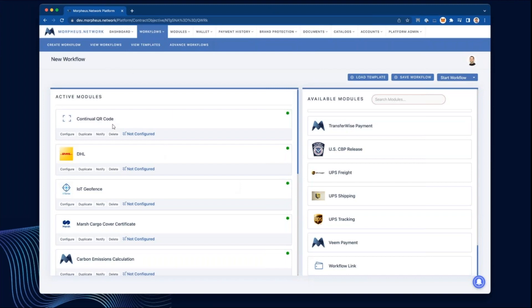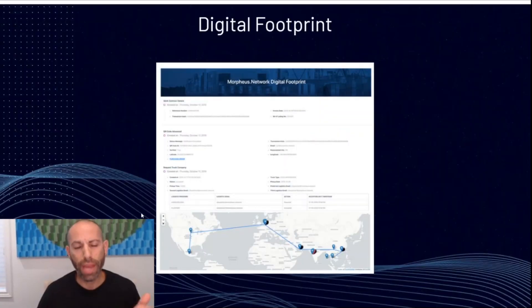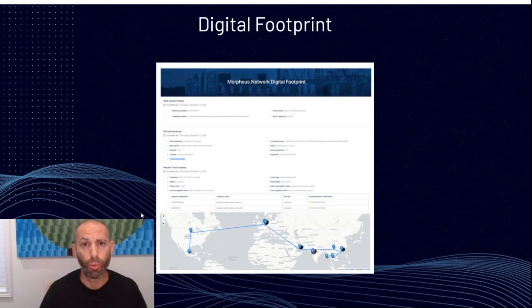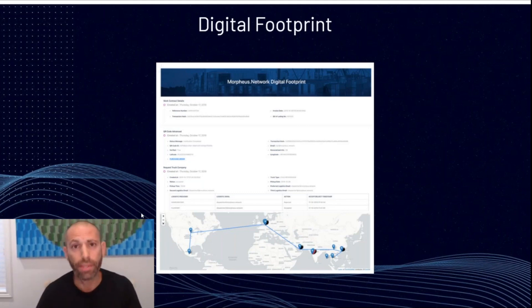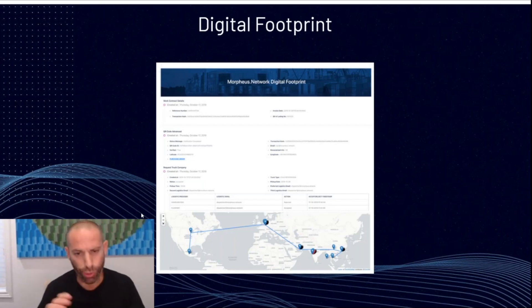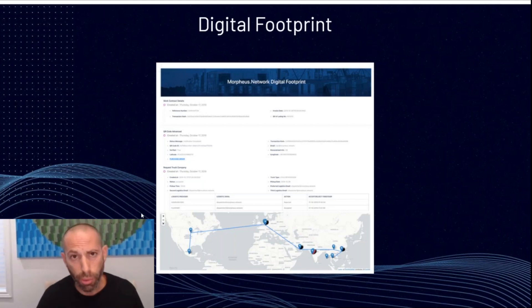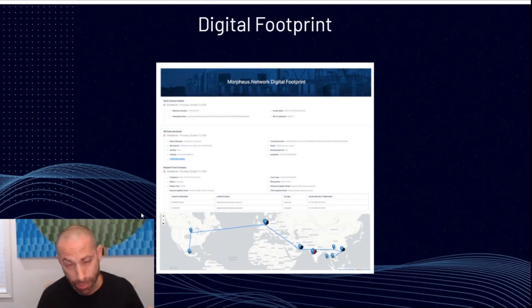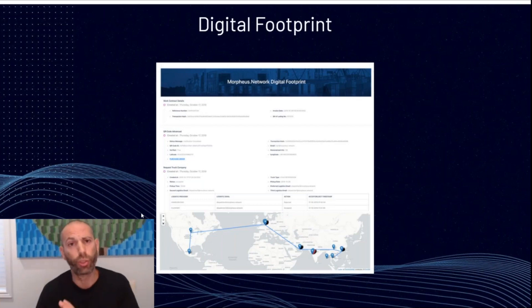The result is a digital footprint for every single shipment that goes through our platform. We record every single transaction — whether it's a handling point, submission of a document, a payment, an IoT device trigger, a sensor reading like temperature or humidity. It all gets recorded on this immutable digital footprint. It's immutable because it's recorded on a blockchain. Once something's written to a blockchain, it can never be changed or manipulated. You can always go back to this digital footprint and see exactly what occurred, creating an amazing digital twin on-chain.